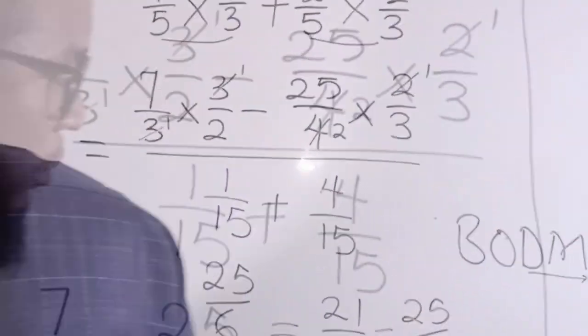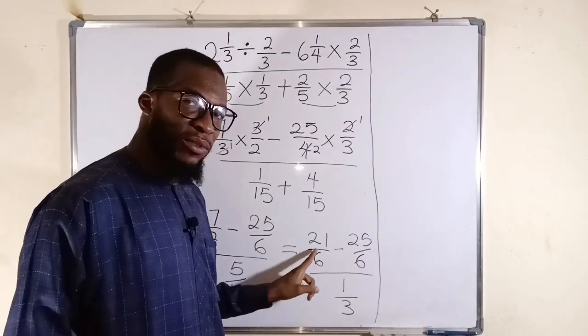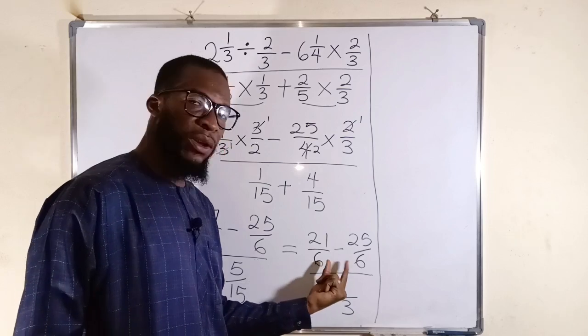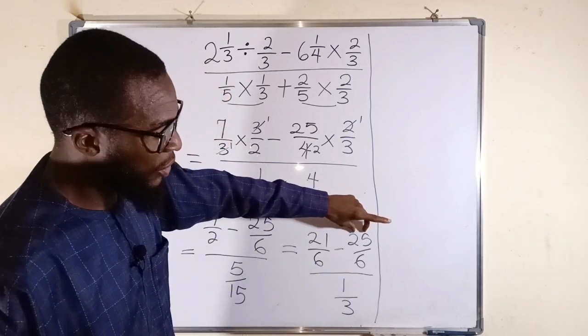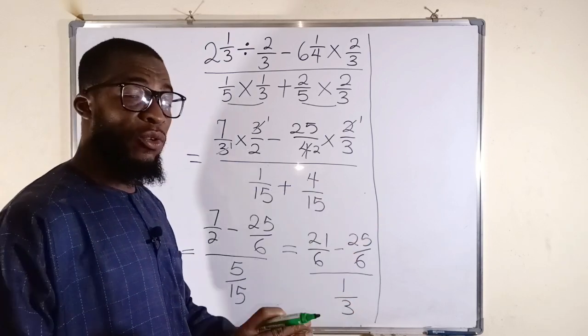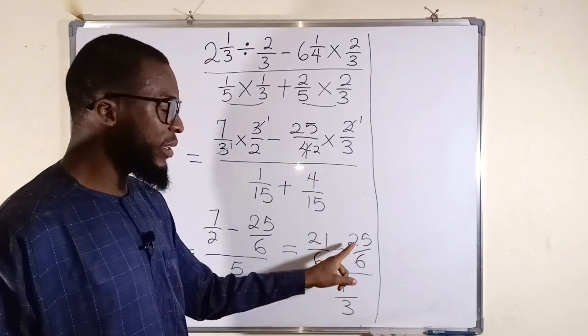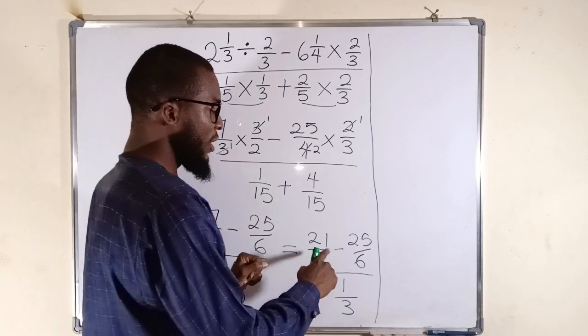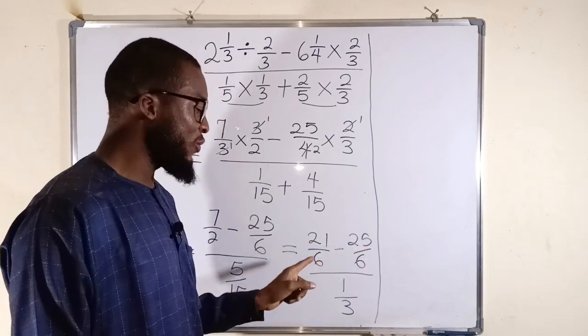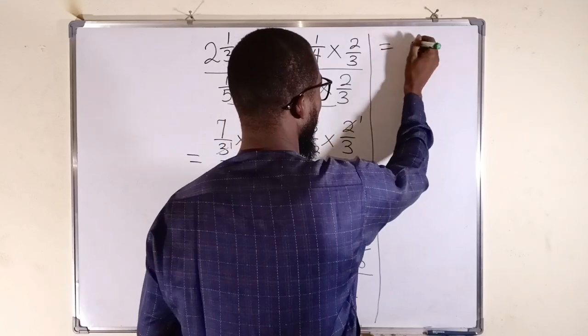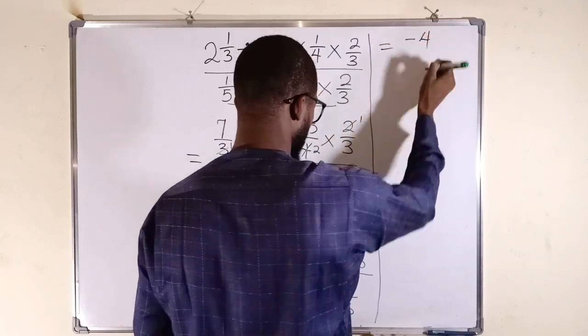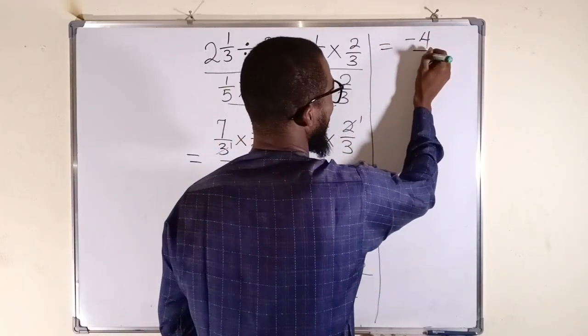So if you observe these fractions, they have equal denominators. So you can take 21 and subtract 25. You know, it is going to give us a negative number because 25 is greater than 21. So it's like saying 25 minus 21, which is 4. But you have to attach a negative sign. Negative 4 divided by 6.